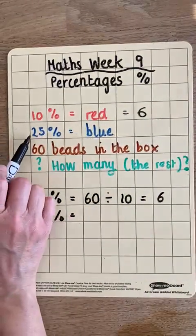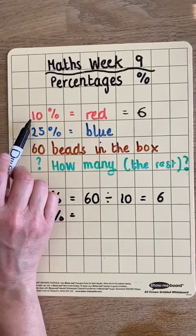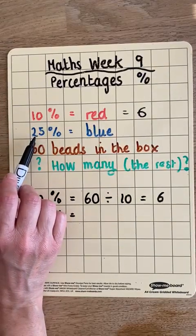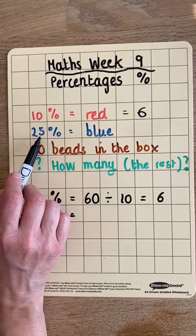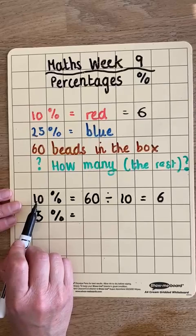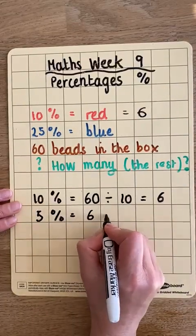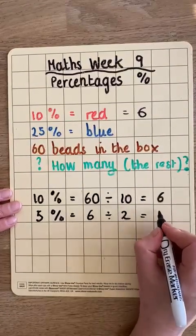Now we need to find the value of 25% — how many beads is that? If we know that 10% is 6, then 25% is made up of 10% add 10% add 5%. But we don't yet know what 5% is. So 5% will be half of our 10% — in other words, our 6 divided by 2, half of 6, which is 3.